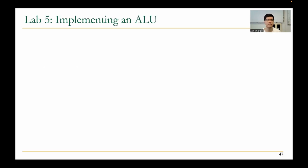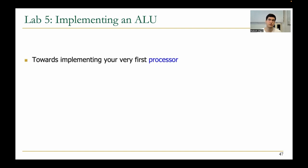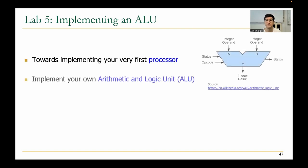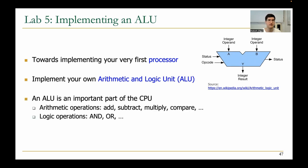In the fifth lab, you will implement an ALU. This will be your first step towards implementing your very first processor, because ALUs are a key component in processors. You will implement your own arithmetic and logic unit — an important part of the CPU. It will be able to perform arithmetic operations such as add, subtract, multiply, and comparison, and logic operations like AND and OR.